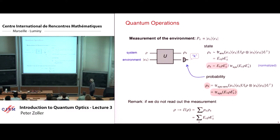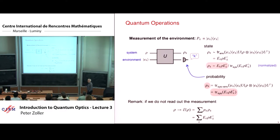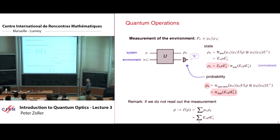In quantum optics, let's suppose the measurement apparatus is a photo detector. The photo detector can either not click or it does click, giving two Kraus operators. We will compute what Kraus operators correspond to click and no-click in small time slots, repeat this many times, and under certain assumptions we will see that the outcome is the master equation, derived by looking at the time evolution of system plus environment in terms of what we call the quantum stochastic Schrödinger equation.